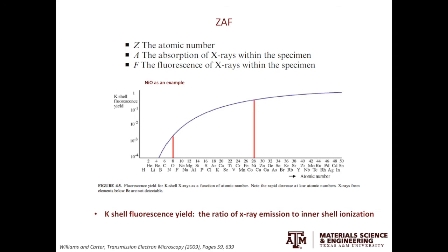Using the nickel oxide as an example, the atomic ratio is 1 to 1. However, by looking at the intensity or counts of X-rays alone, we'll have a lot more nickel counts than the oxygen counts. Note in this graph, the y-axis is in log scale.